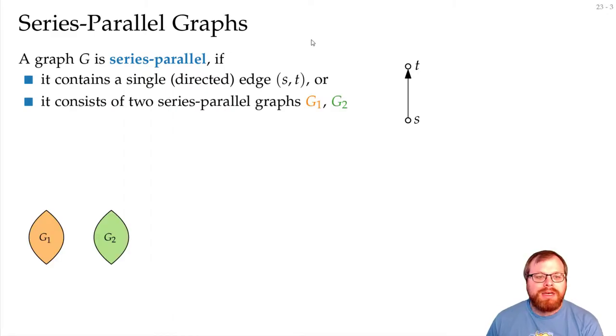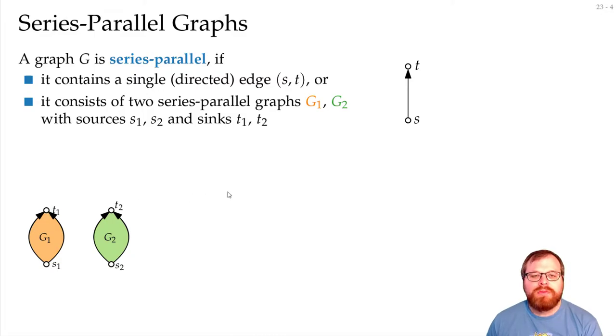Then, if we have two Series-Parallel Graphs G1 and G2, and both have a single source and a single sink, then we can combine those to another Series-Parallel Graph. For that we have two options.